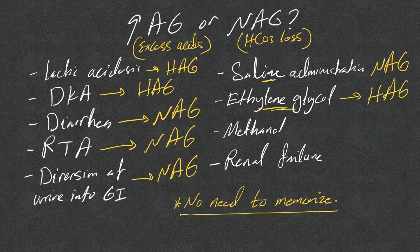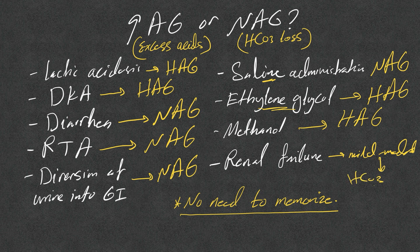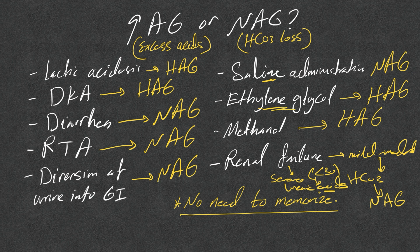Renal failure has two phases. Mild to moderate renal failure leads to bicarb loss — normal anion gap. When renal failure becomes severe (GFR less than about 30), uremic acids accumulate in the ECF — high anion gap. So early renal failure gives normal anion gap, while advanced renal failure gives high anion gap metabolic acidosis. No need to memorize — just understand it.